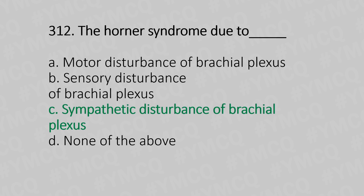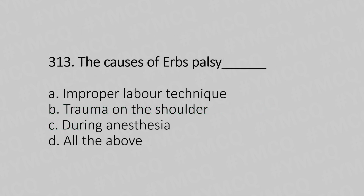Question 313: The cause of Erb's palsy — Option A: improper labor technique. Option B: trauma on the shoulder. Option C: during anesthesia. Option D: all of the above. The answer is Option D, all of the above.